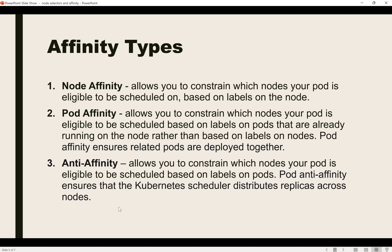If we talk about affinity, there are three different types: node affinity, pod affinity, and anti-affinity. Node affinity is similar to node selector with a little more flexibility — you can define whether the scheduling is enforced or just preferred.